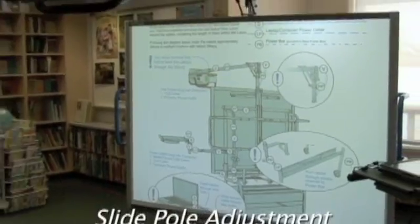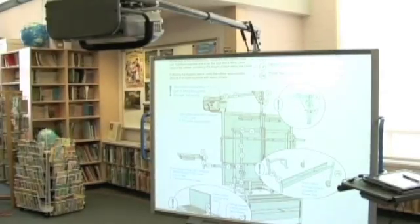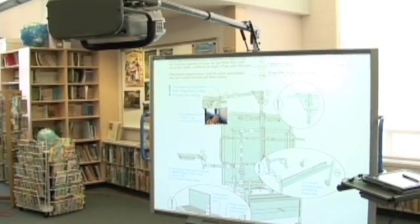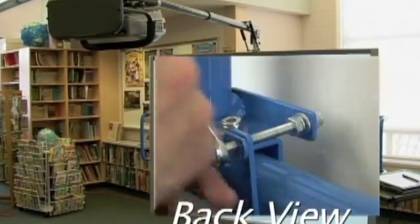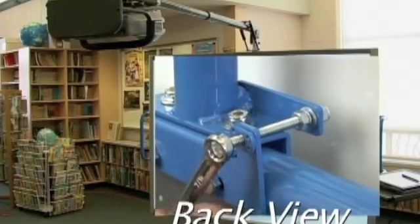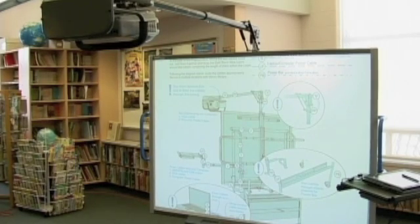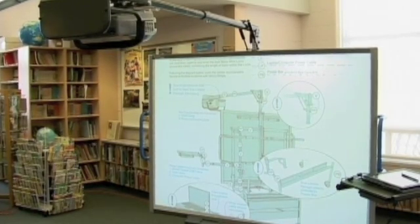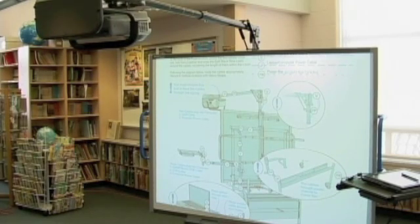If your image is square but off-centered, you will need to use the slide pole adjustment feature to swing the arm to center the image. By turning the bolt shown, you rotate the entire projector arm one way or the other. You'll need to rotate in the direction necessary and then move to the front and adjust for a square image. If necessary, you may need to adjust the back a bit more. Carry on adjusting back to front until the image is square and centered on the board.